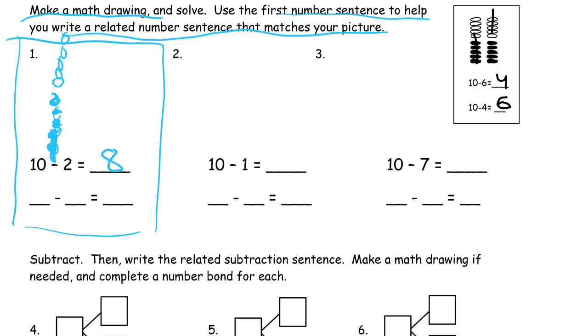And so our related subtraction sentence is going to, we're still going to start with 10. If we can have 10 and we can break it into parts of 2 and 8, right? So if we have 2 crossed out, we'll have 8 left. But if we start with 10 and we cross out 8, we also know we're going to have 2 left.